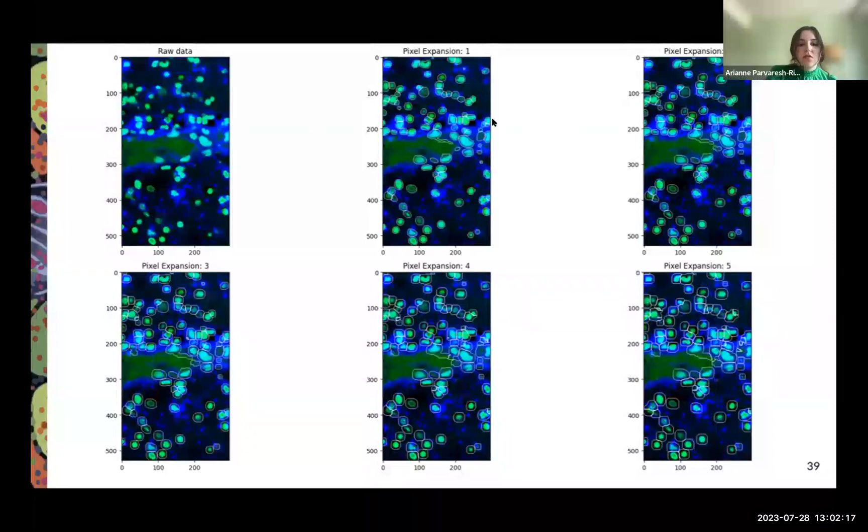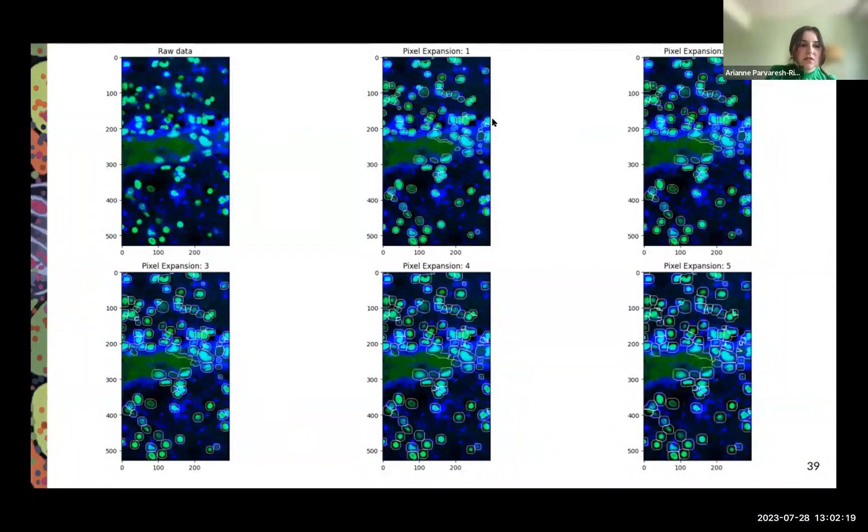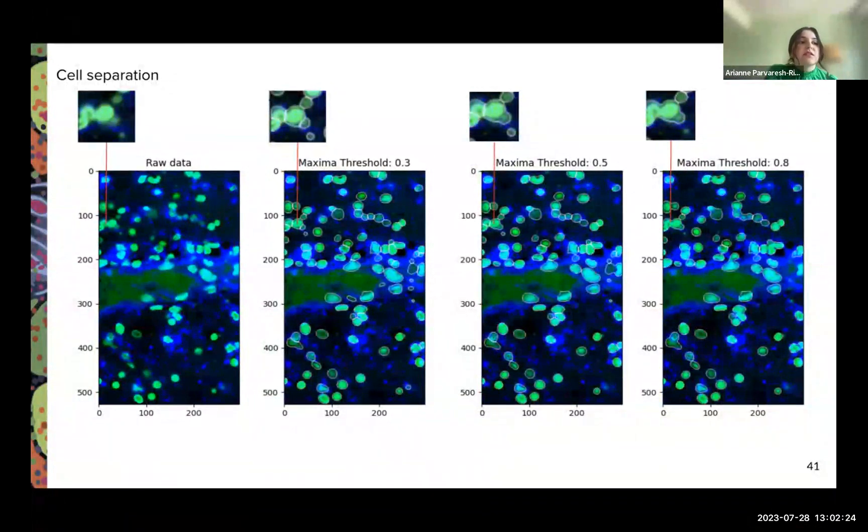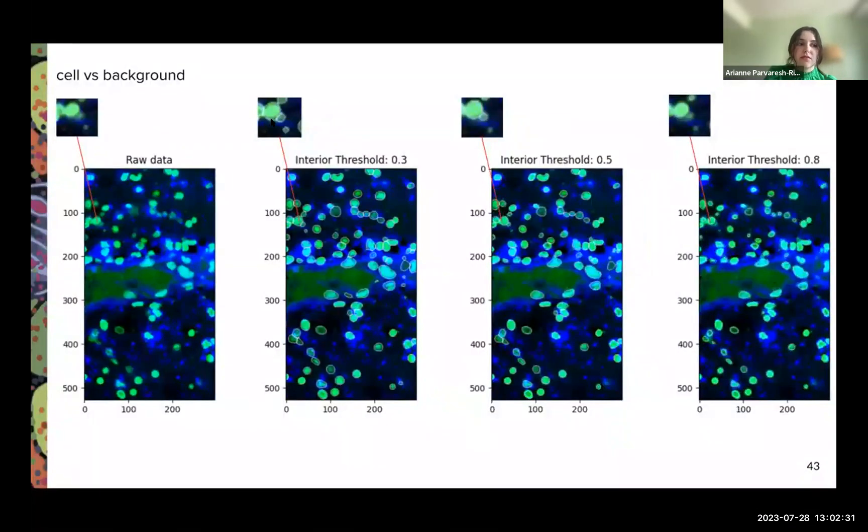Same with the third sample. With pixel expansion, as the value is increased, more cytoplasm is captured. With the interior threshold value, the lower the value, the more cells are separated. Interior threshold, more conservative detection.